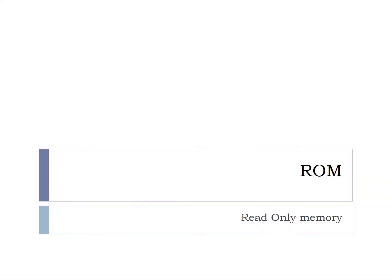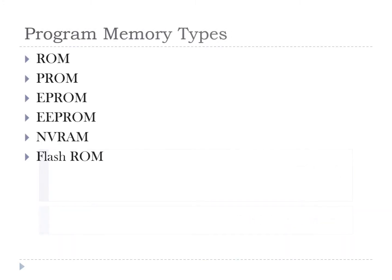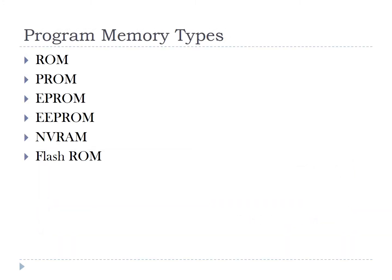I am going to tell you about read-only memory or program memory of microcontrollers. There are six types mainly: one is ROM, second is PROM, third is EPROM, fourth is EEPROM, fifth is NVRAM, and sixth is Flash ROM.